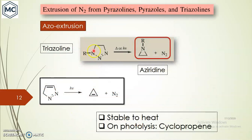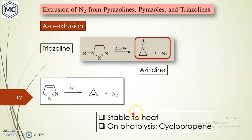For triazole, in the presence of heat or light, nitrogen undergoes extrusion to form a carbene, and this is another example. The cyclopropane formed is actually stable to heat, but on photolysis you get cyclopropane.